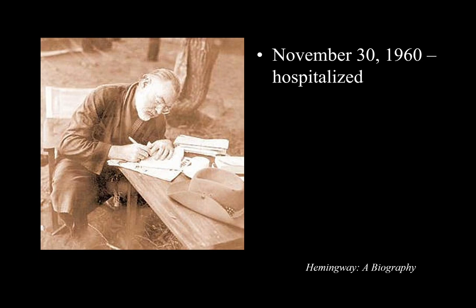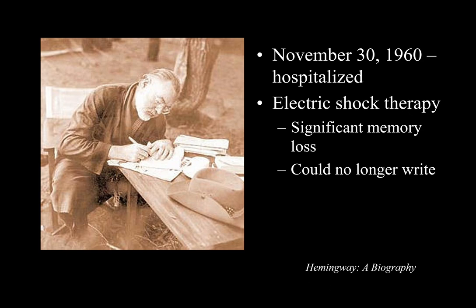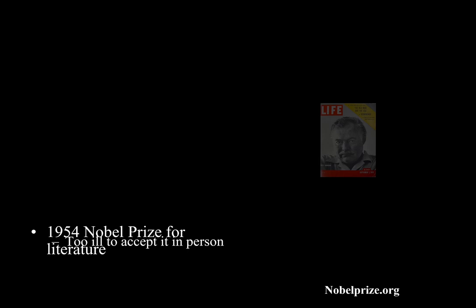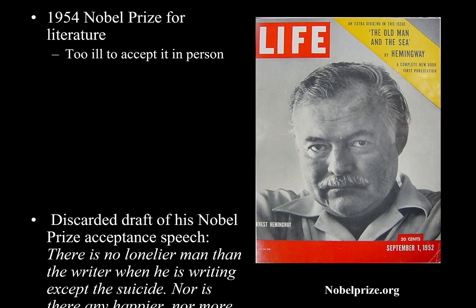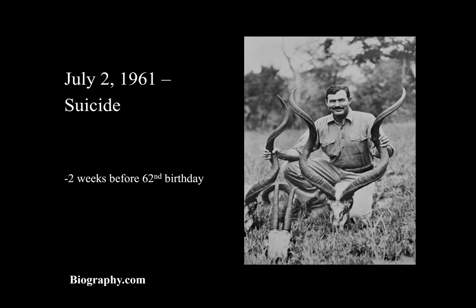On November 30, 1960, he was hospitalized for severe depression. He underwent electric shock therapy, and this, instead of helping, created significant memory loss and made it so that he could no longer write, which drove him even deeper into depression. This depression can really be seen even before the electric shock therapy, when he won the Nobel Prize for Literature and could not go accept it in person. This is an excerpt from the acceptance speech that he wrote: 'There is no lonelier man than the writer when he is writing, except the suicide.' So suicide was already on his mind — remember, his father had committed suicide. Hemingway died by suicide on July 2, 1961, two weeks before his 62nd birthday.